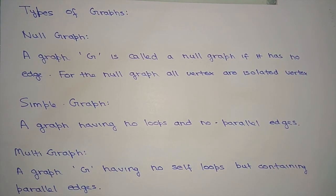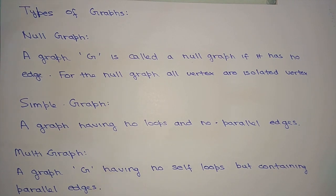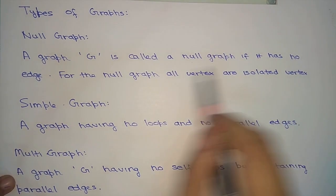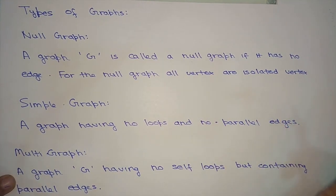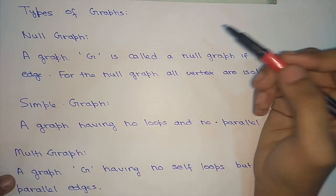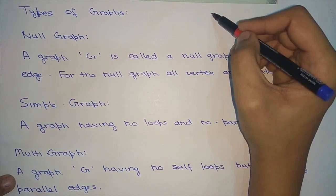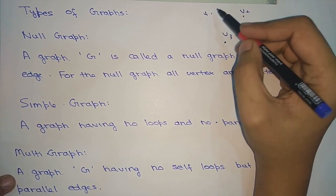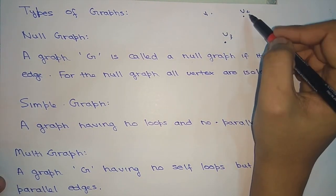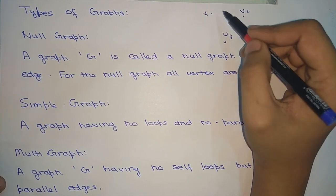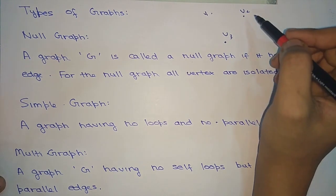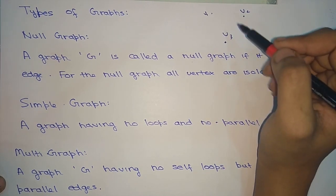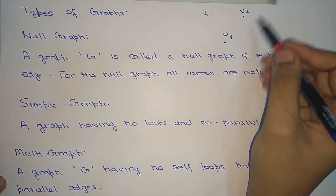Now we will look at the types of graphs. The first type is a null graph. A graph G is called a null graph if it has no edges. For a null graph, all the vertices are isolated vertices. Suppose we are given a graph with vertices V1, V2, and V3 — there is no edge existing between any of the vertices. All of these vertices are isolated vertices as there is no edge connecting or incident on them. So this is a null graph.